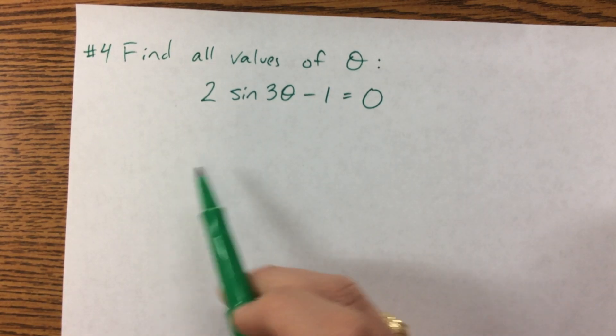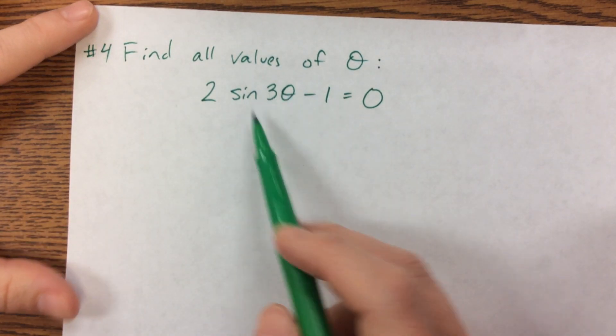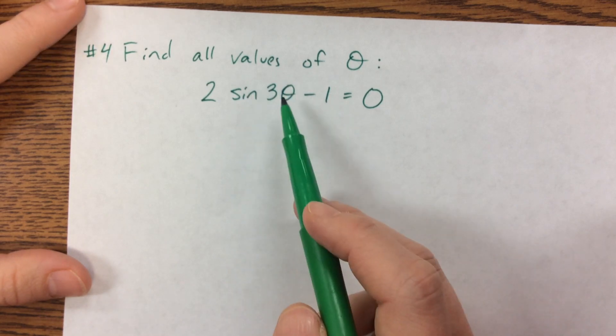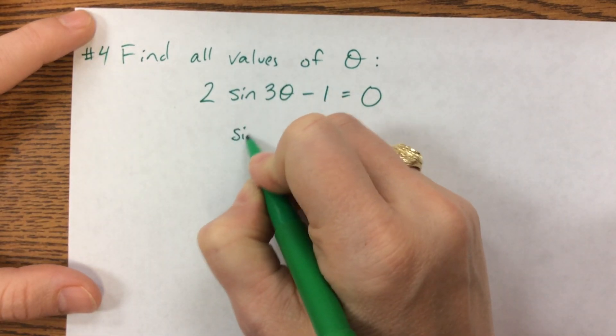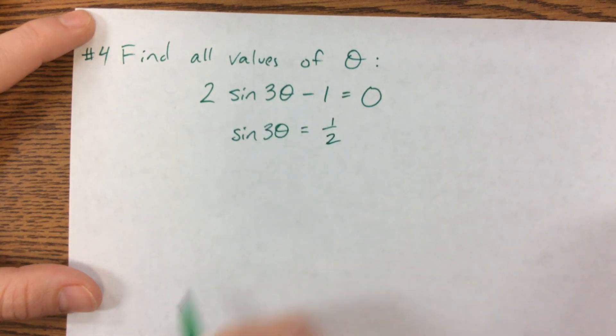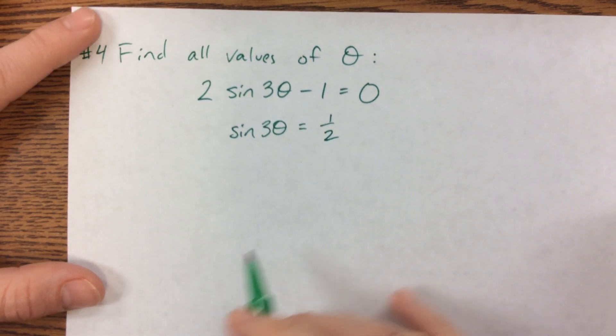Our fourth example has us looking at a situation where it's not just theta. This one is, in this situation, it's 3 times theta. So we're going to behave like we have before, and we're going to say that sine of 3 theta is equal to 1 half.